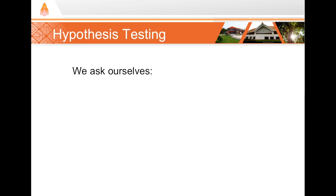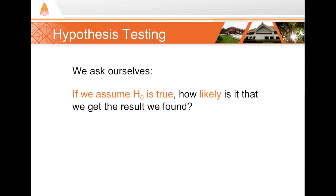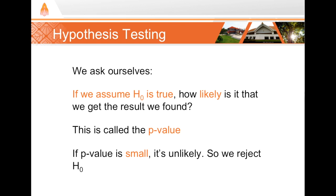Let's summarize. In hypothesis testing, we ask ourselves, if we create a model, a null hypothesis explanation, and we assume that it is true, how likely is it that we get the results that we find? We compute this probability using a chosen statistical test. The resulting probability that we get is called the p-value. If p is small, it's unlikely that we got this result under the assumptions that we put together in our null hypothesis. In that case, we reject our null hypothesis.